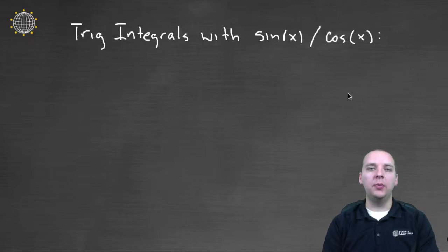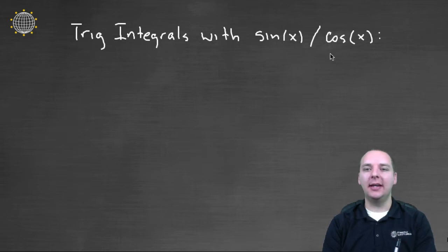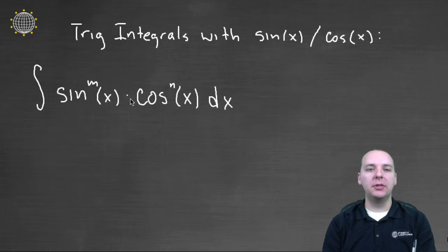In this video, we're going to talk about what we do when we have a particularly large, ugly integral that has a lot of sines and cosines in the integrand. Trig integrals with sin(x) and cos(x). If it's of this form, it's going to look something like this: integral of sin^m(x) times cos^n(x) dx. It might be sin^5(x) times cos^2(x) or something along those lines.